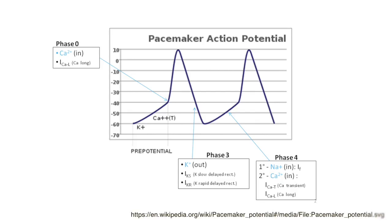The pacemaker potential is slightly different in that it undulates like a waveform, whereas the ventricular myocyte potential goes from a point of isoelectricity and is almost like climbing a cliff as it depolarizes — very vertical — and then begins to taper off a little bit after that.